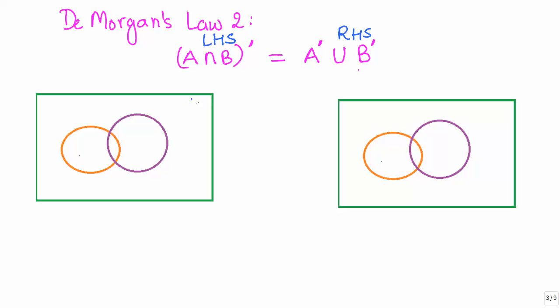So, we have this universal set. This is set A, orange circle. Set B, the purple one. The same thing for here, we have this set B and then this is set A.